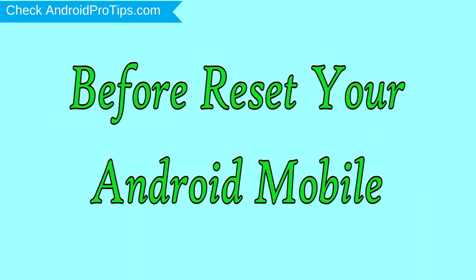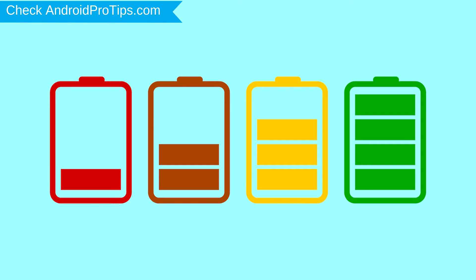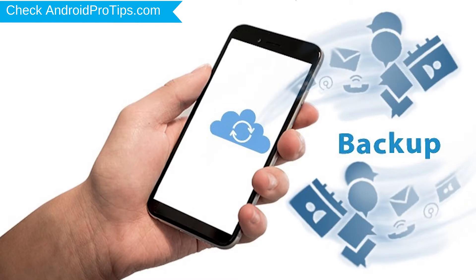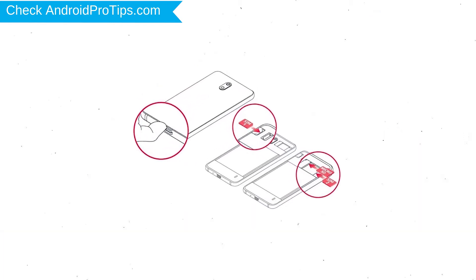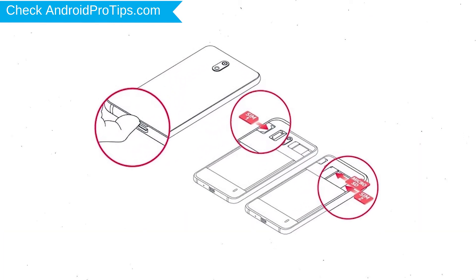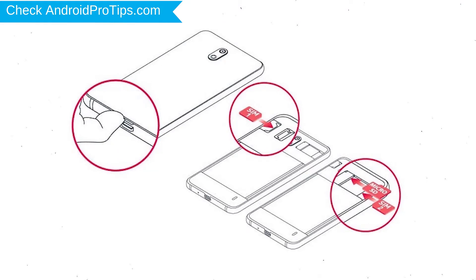Before resetting your mobile, charge your mobile if the battery is less than 50%. You need to make sure that the data on your device is backed up so you do not lose valuable photos or documents. Reset deletes all your mobile data, so you better back up all important data and remove SIM and SD card.